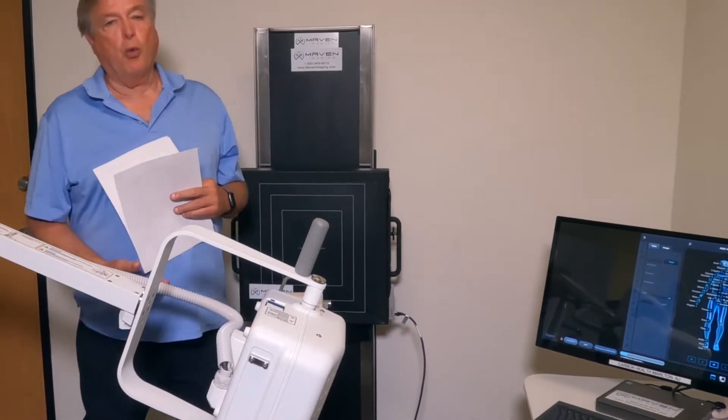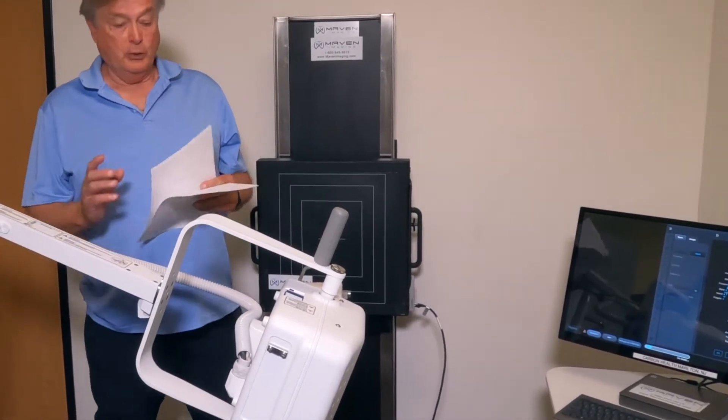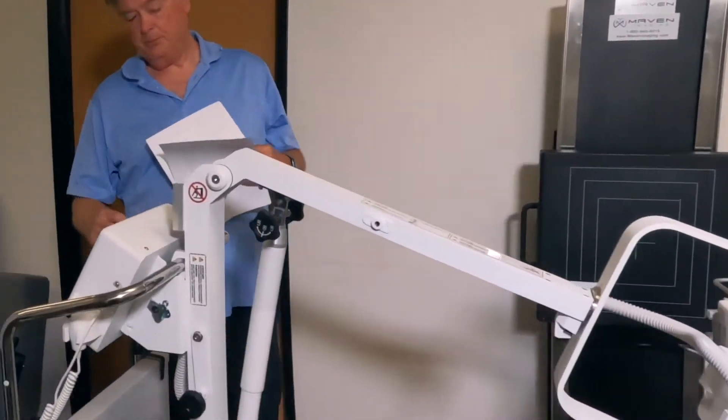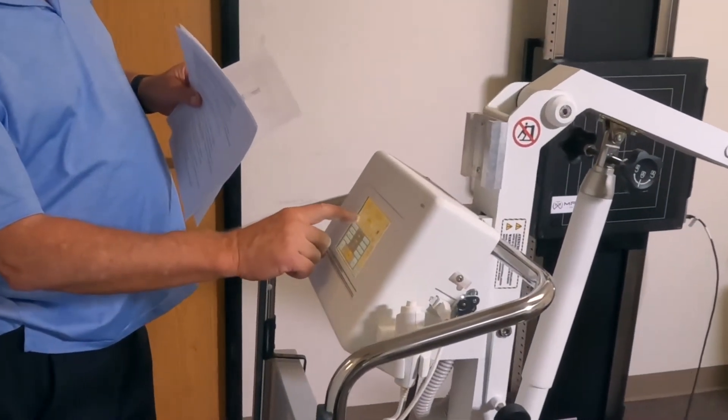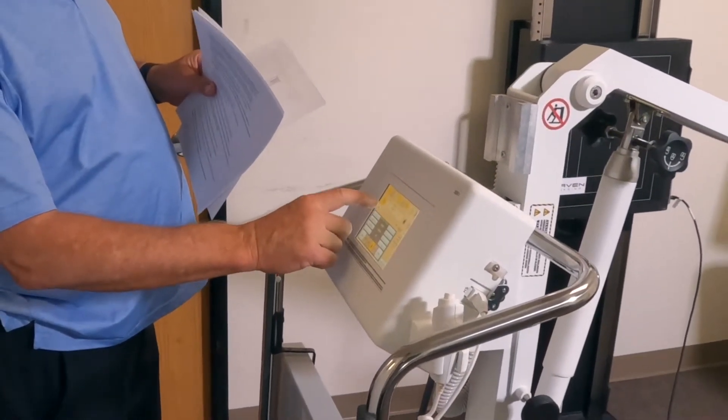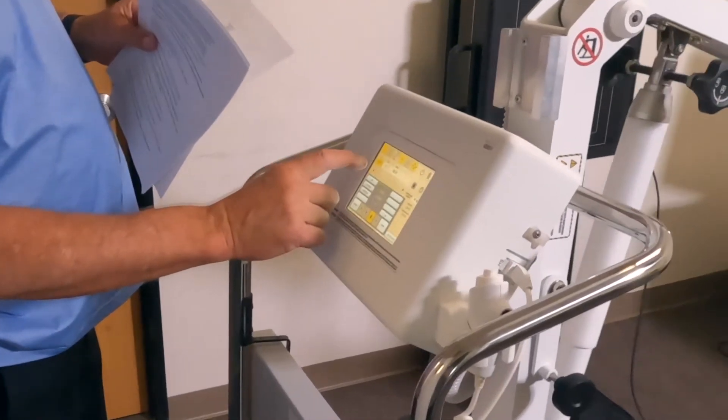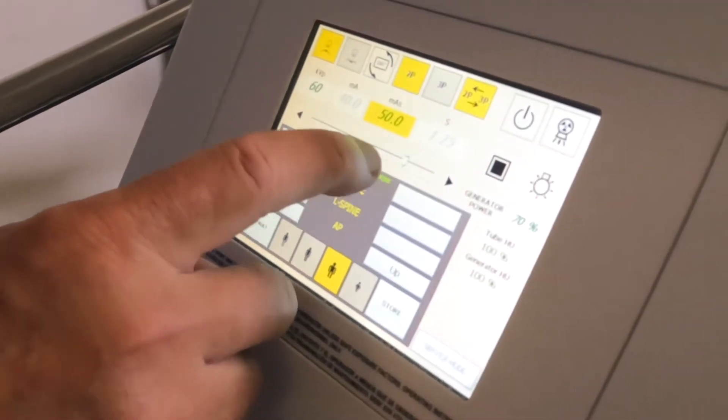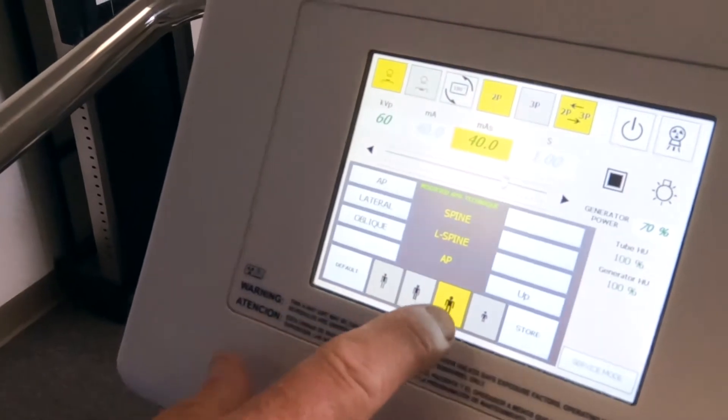The first thing we're going to do is warm up the Dragon for the first time use in the morning. What you need to do is come over to the console and change the KV setting to 60 and change the MAS to 40.